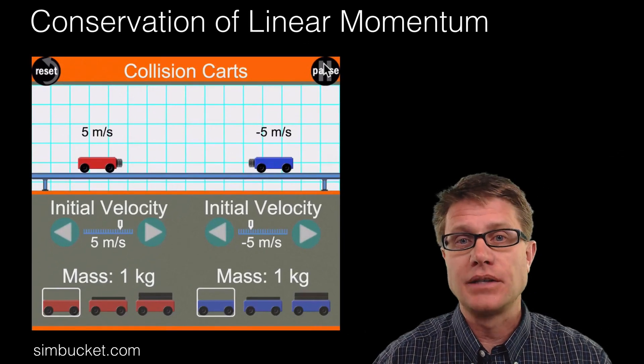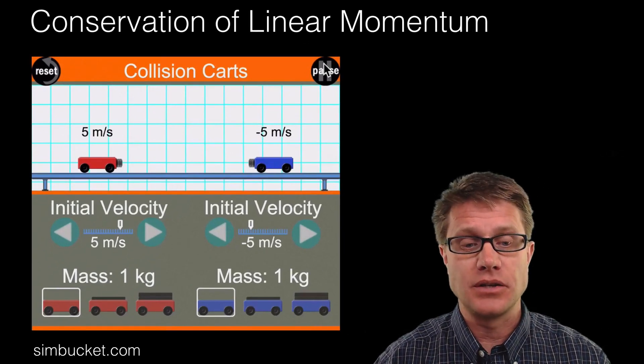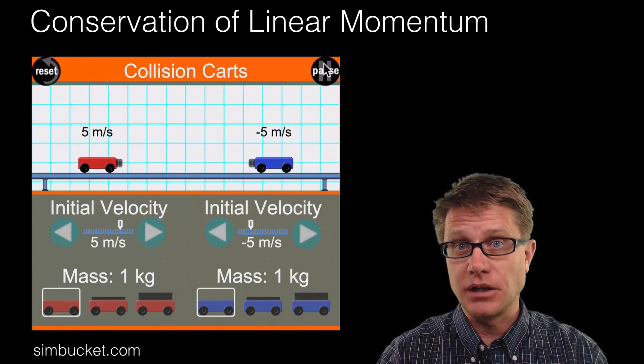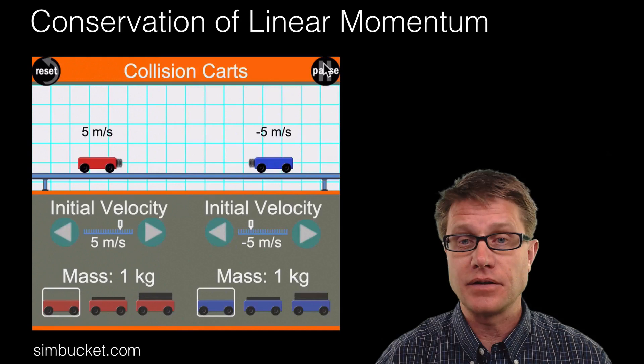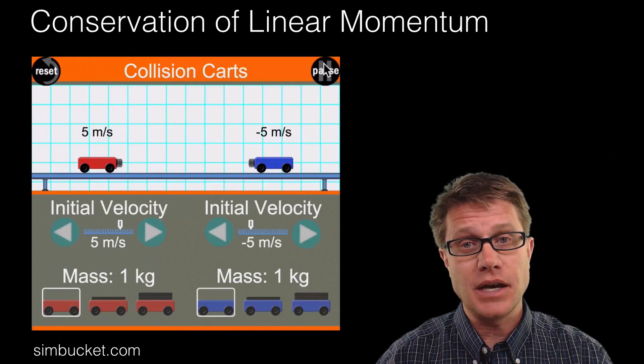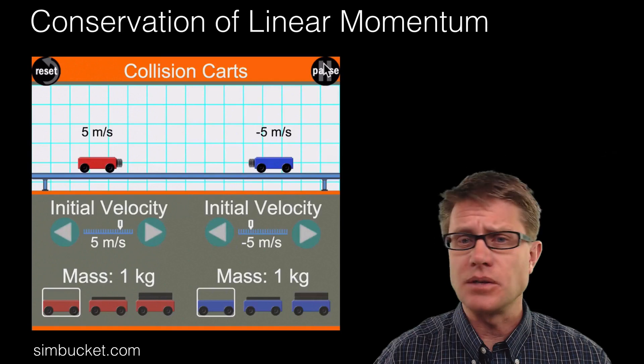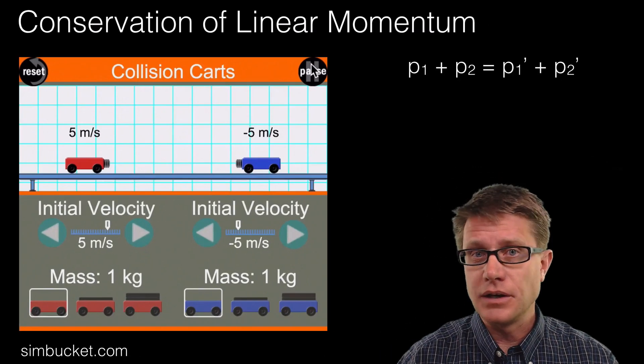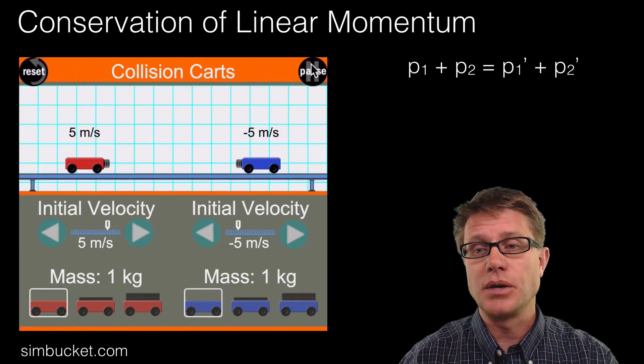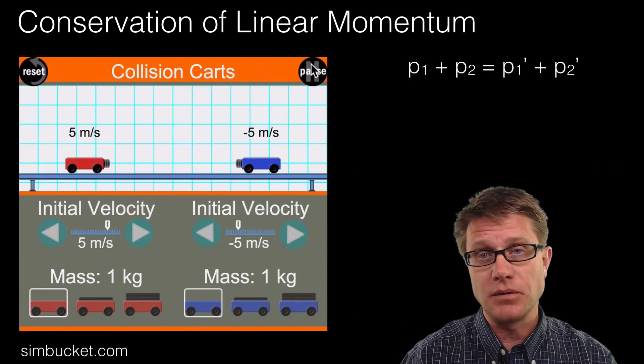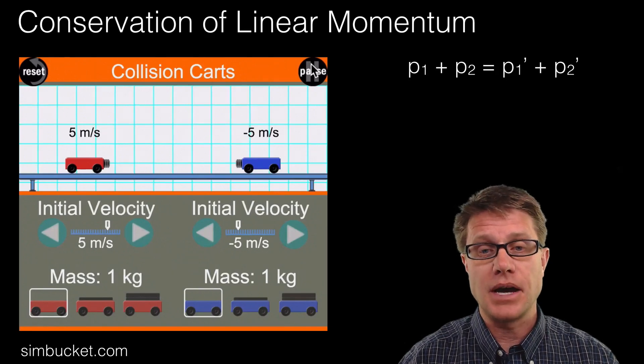Now the best way to verify this is through experimentation. So we are using a simbucket simulation. We have got these carts that are going to collide with one another and it will show us what their velocity is after the collision. And so what we will do is figure out does the linear momentum maintain? And then does kinetic energy maintain to figure out if it is elastic or inelastic. And so linear momentum, remember P1 plus P2 equals P1 prime plus P2 prime. In other words the momentum of those two objects before has to equal the momentum after.